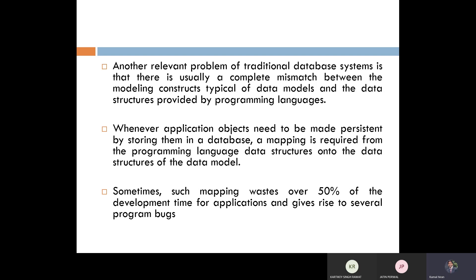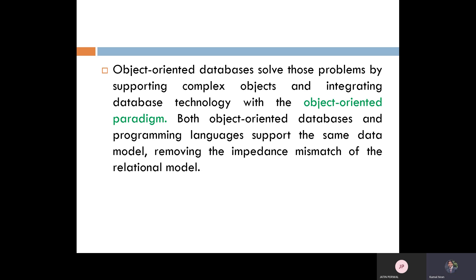Let me give one example of how it works and what are the components we use in the object-oriented database. Whenever we are performing any operations in this database system, we have a kind of data structure, data models, and we are using different kinds of programming languages. We need a kind of structure for the association of the database. That makes the object-oriented database different from the traditional database system. The backbone for the object-oriented database is the object-oriented paradigm. We will discuss all these paradigm components one by one.